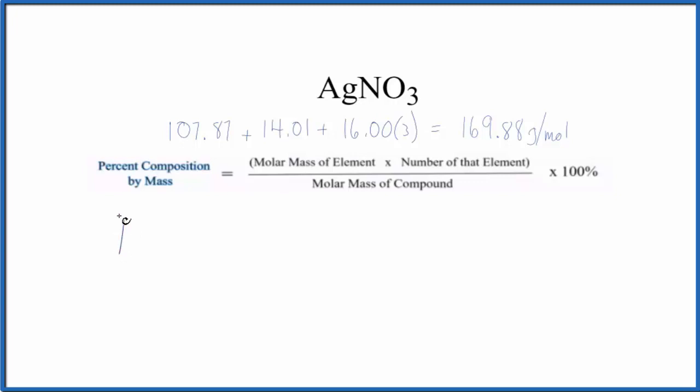Let's start with the silver, Ag. And we have the mass of the element. So silver is 107.87 grams per mole. We get that from the periodic table. Since there's only one silver, we would multiply by one, so we don't need to do anything. And then we divide that by the molar mass of the compound, which we just found.